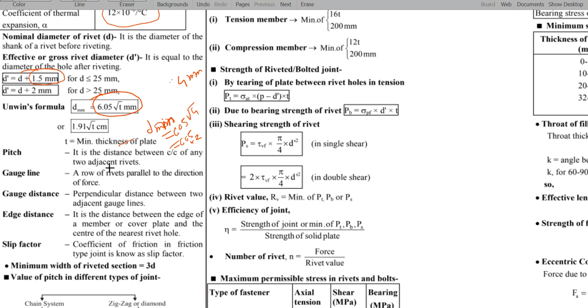Pitch is center-to-center distance. Gauge line directly, the equation should be. Row of rivets parallel to the direction of the force is nothing but gauge line. What is gauge distance? Perpendicular distance between two adjacent gauge lines. Whereas, pitch is the distance between the center-to-center of any two adjacent rivets. Then, edge distance is the distance between the edge of a member or cover plate and the center of the nearest rivet. Another important factor is slip factor. Coefficient of friction in friction type is known as slip factor.